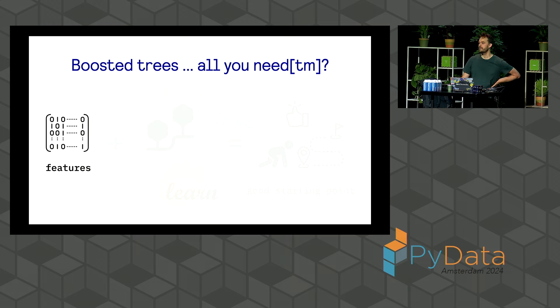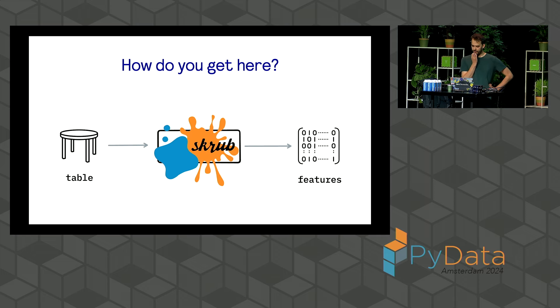But it's not like boosted trees are all you need. That's not necessarily true. What really matters is the features that go into your machine learning model, also when you're doing tabular data. And that's why some of the Scikit-learn people have also started a new project called Scrub. And this is a project that Probable also helps maintain.